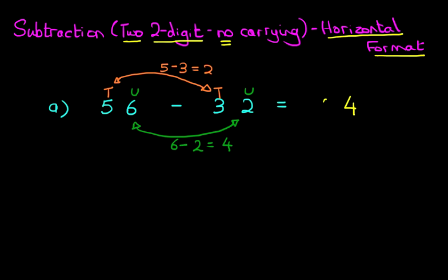And we have got 2 tens. And that is the answer. 56 minus 32 equals 24.